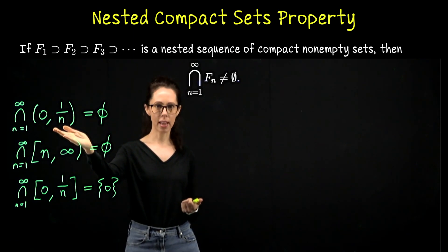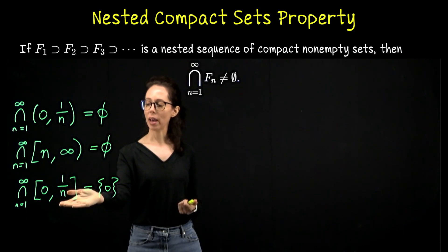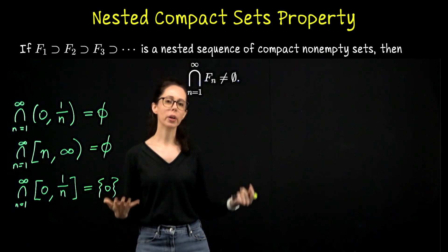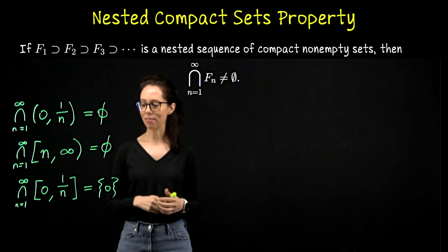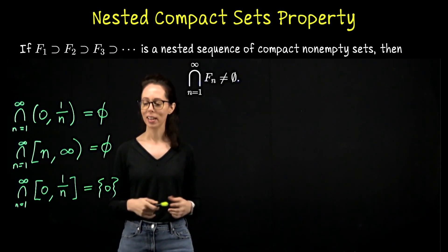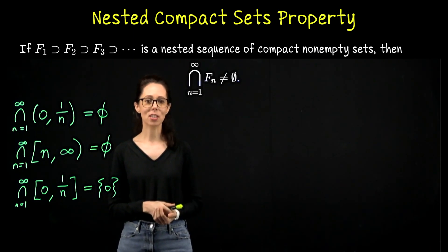This is just an illustration of this theorem. Here we have bounded sets which are not closed. Here we have closed sets which are not bounded. And here we have sets which are closed and bounded. Because we're working on the real number line, that's equivalent to being compact. So this is a nested family of compact sets and their intersection has a point in it, so their intersection is non-empty.